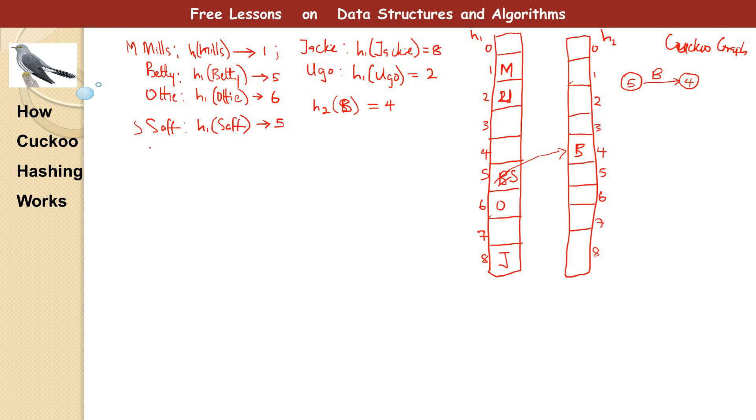Let's say we take another one, Cani. We take h1 of Cani and it gives us 3. So we check 3, no problem. We store it in there.